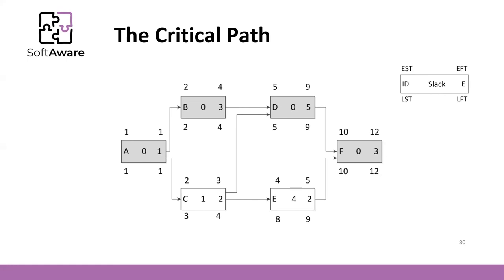What is the duration of the critical path of this project? We can sum the durations of A, B, D, and F: 1, plus 3, plus... giving a total of 12 units of time. So the critical path is 12 units of time. Any delay in this sequence of tasks delays the project.